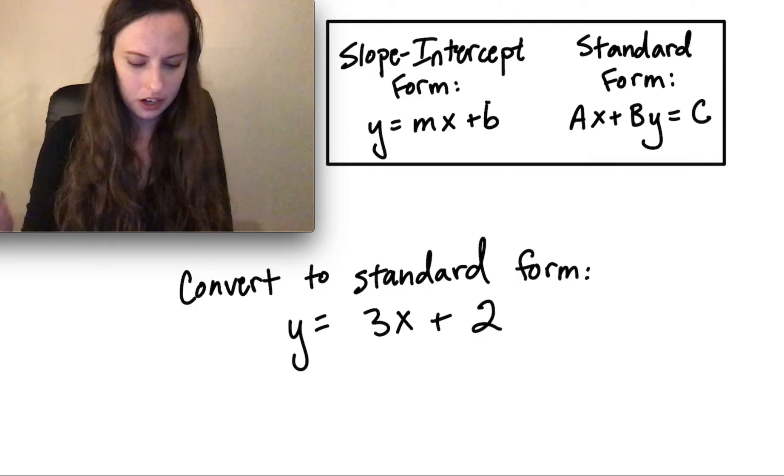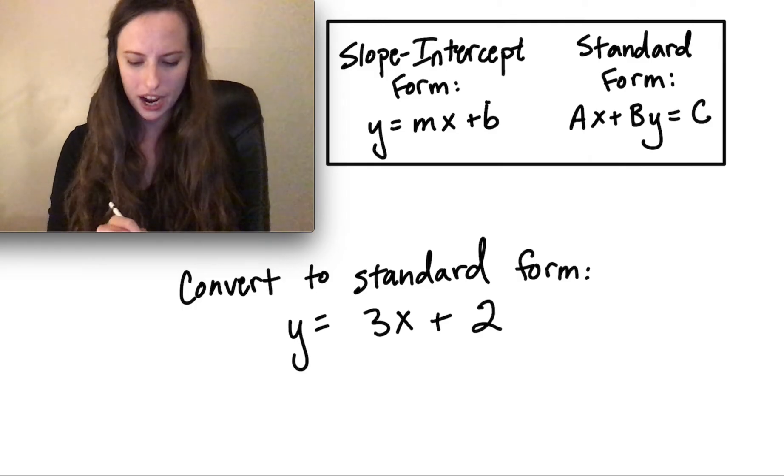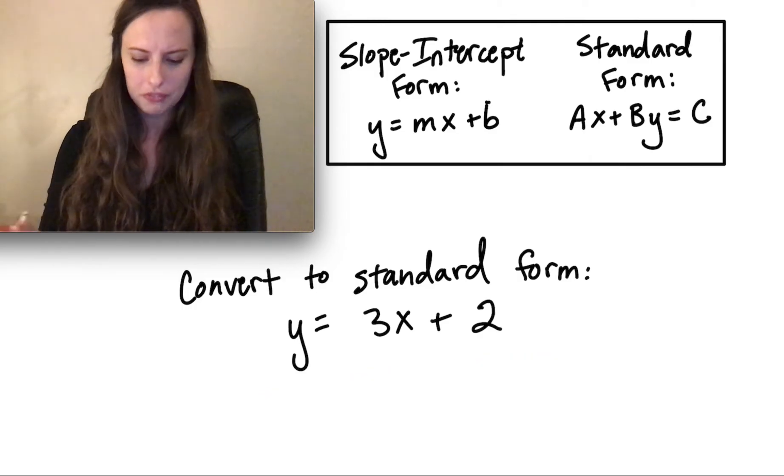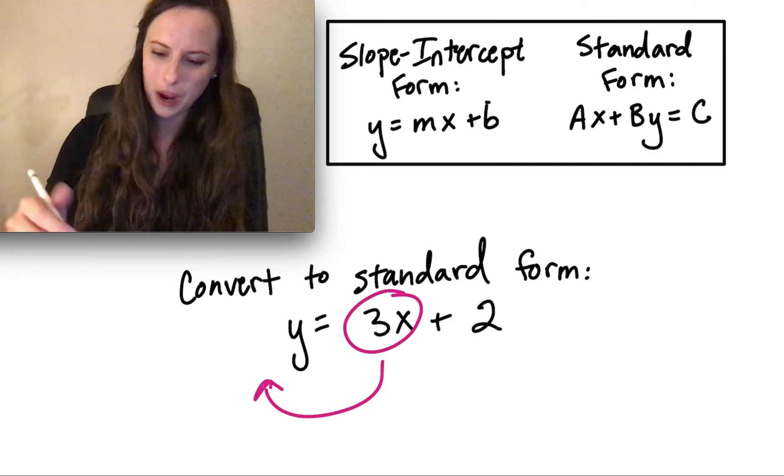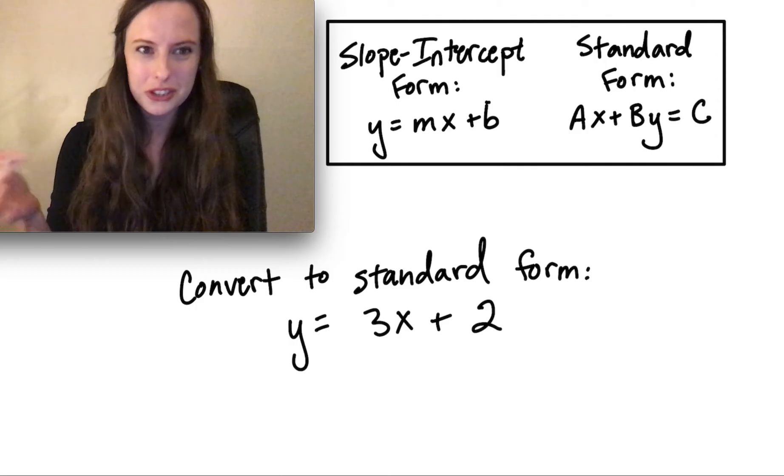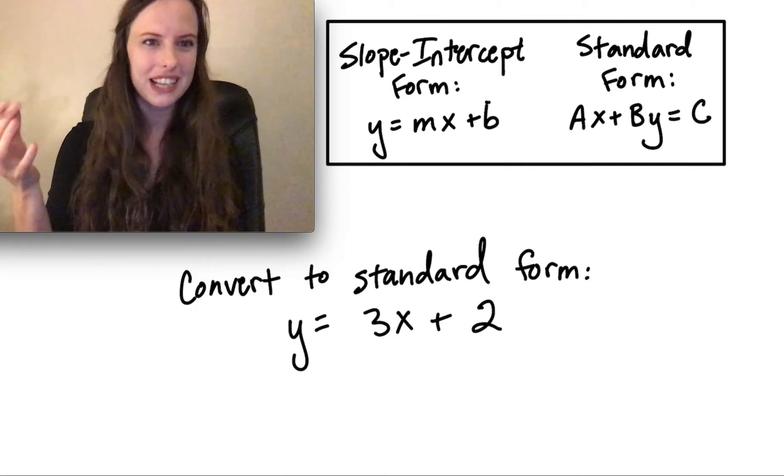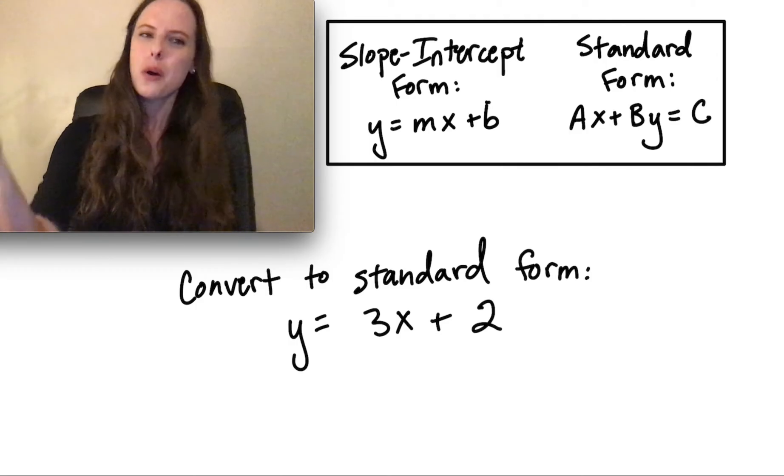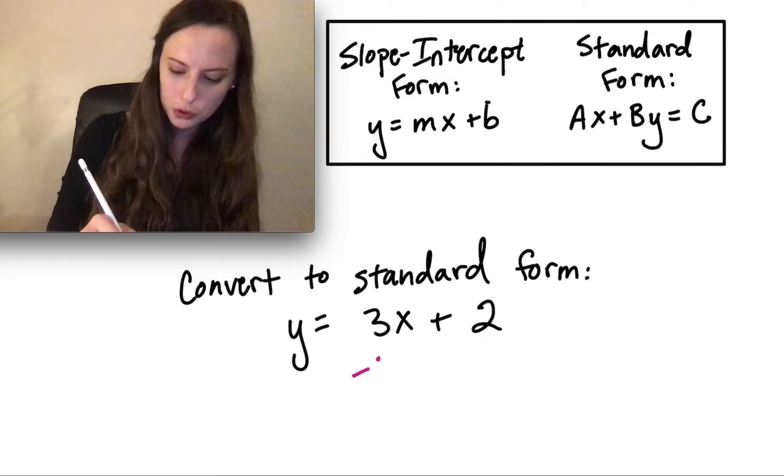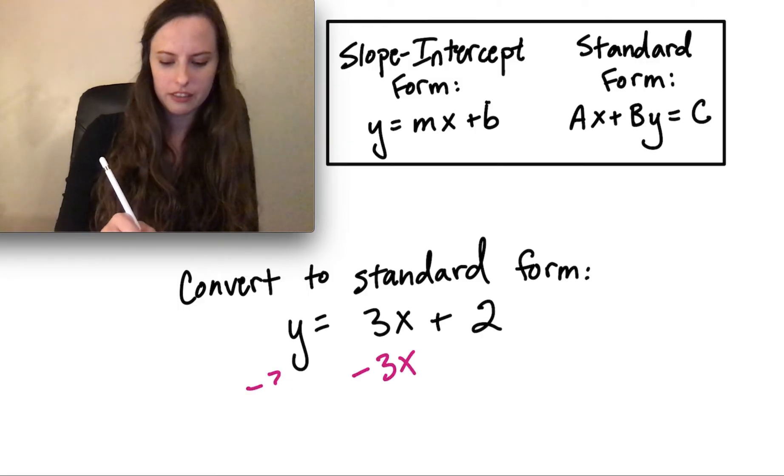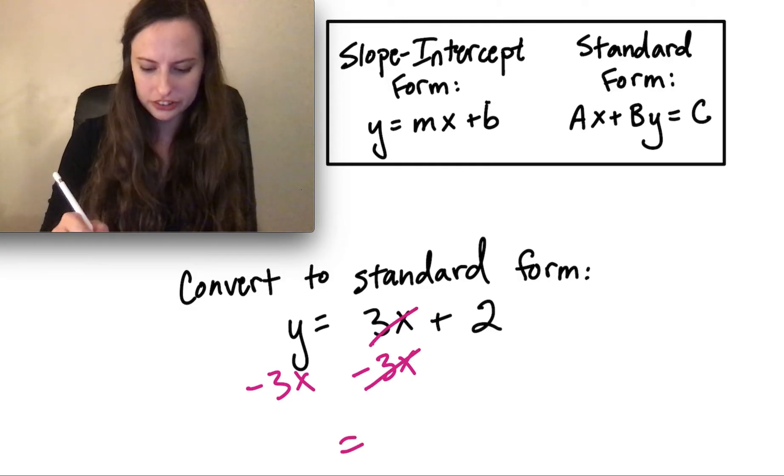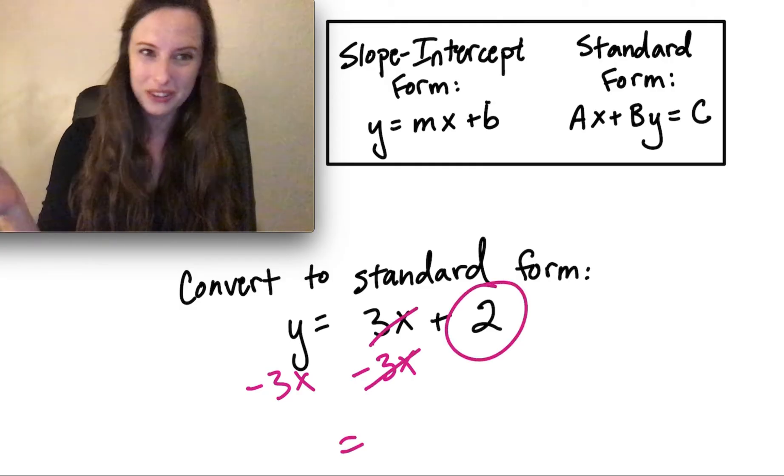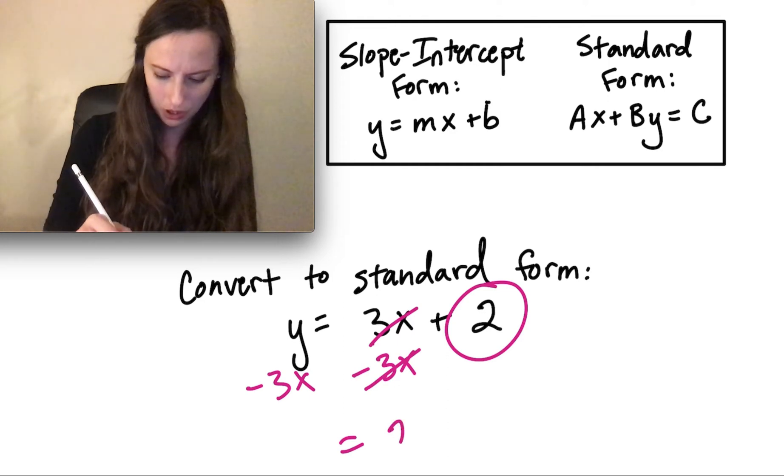So let's get started with this first example. We have y equals 3x plus 2. So we want this 3x to be on the other side next to the y. So all we're going to do is move it over using what we know about algebra. Because it's a positive 3x, we want to cancel it out by subtracting 3x from both sides. So the 3x's cancel.